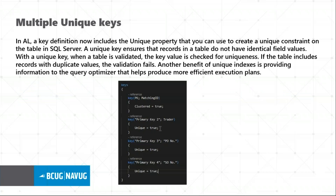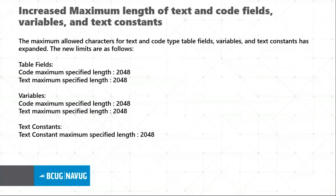Unique keys are used for indexing, specifying that a record should have a unique value other than the primary key. This also helps in SQL querying, giving better optimized results. The next improvement is increased maximum length for text and code fields: by default the maximum length is now set to 2,048 characters — previously it was 1,024 characters.